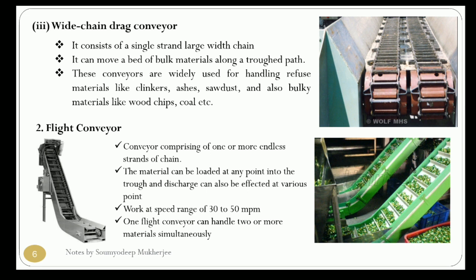The flight conveyor is a specific type of conveyor comprising one or more endless strands of chain with spaced traverse flights or scrapers attached to push granular bulk material along a shaped trough. For this type of conveyor, material can be loaded at any point into the trough and discharged at any point without affecting the rest of the conveying system. Both upper and lower strands may be used for transporting materials in opposite directions.